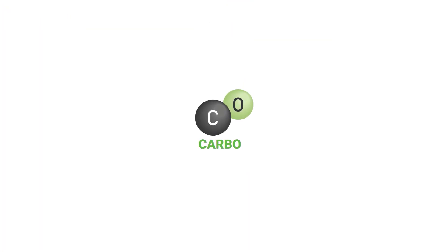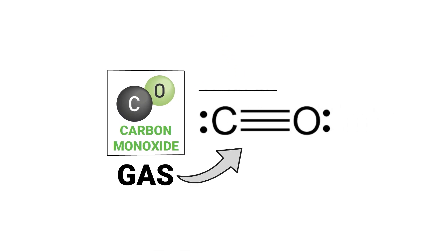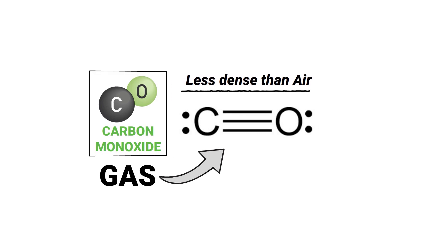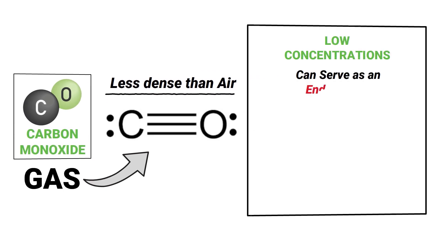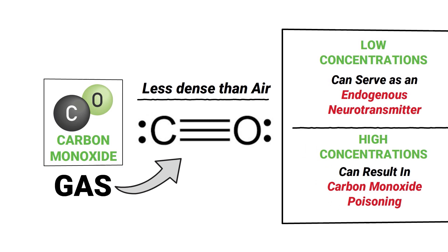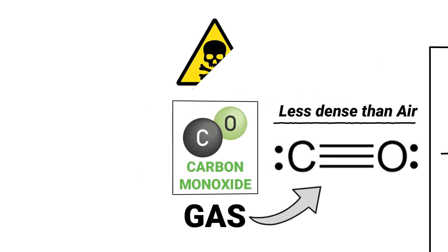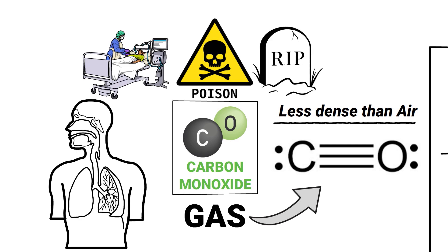Carbon monoxide is a gas that consists of one carbon atom and one oxygen atom, and is slightly less dense than air. Low concentrations of this gas can serve as an endogenous neurotransmitter, whereas high concentrations can result in carbon monoxide poisoning.